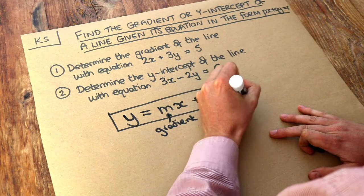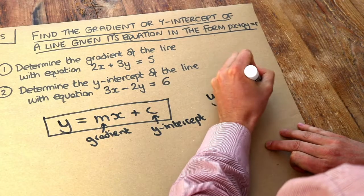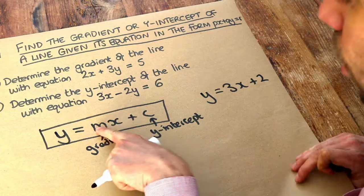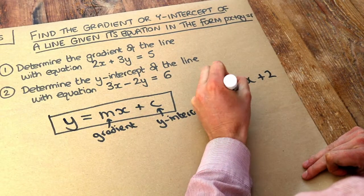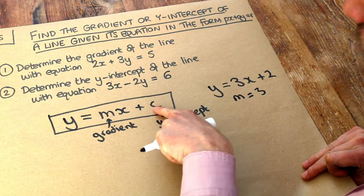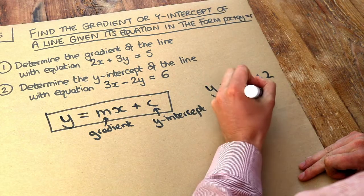We've explored this in previous videos. If we had, for example, y equals 3x plus 2, it's very easy to see the gradient and y-intercept because the number in front of x, the coefficient of x, is the gradient. So the gradient would be 3, and the y-intercept is the non-x term, the constant term, so that plus 2 would be the y-intercept or c.